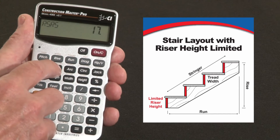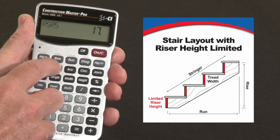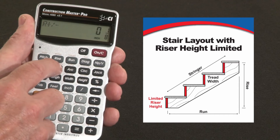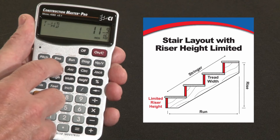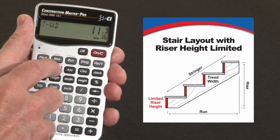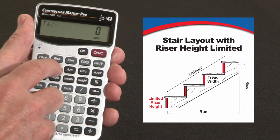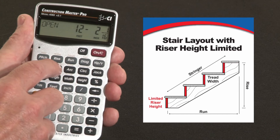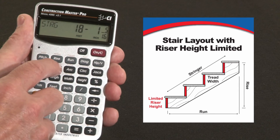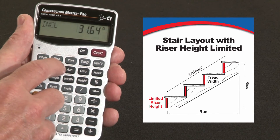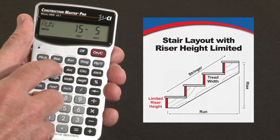Now I can proceed through the routine. There are going to be seventeen risers, with an adjustment of one-eighth of an inch somewhere in that string of seventeen. The tread width is going to be eleven and nine-sixteenths inches, with sixteen treads and no adjustment to that. The stairwell opening is twelve feet two and a sixteenth, the stringer length is eighteen feet one and five-sixteenths, along with the angle of incline and the total run.